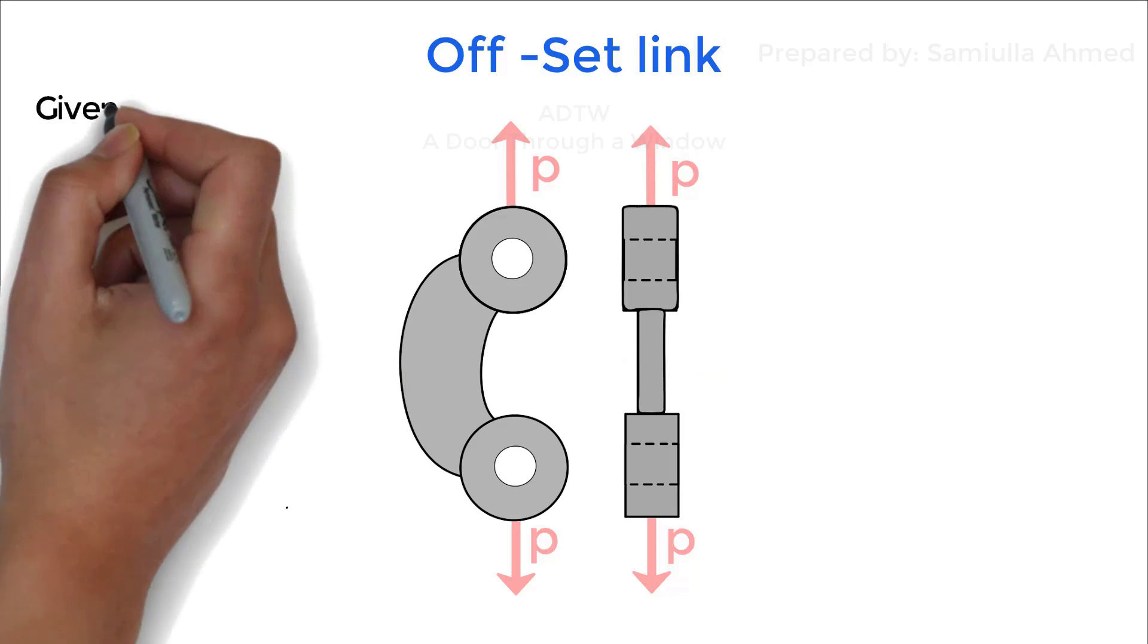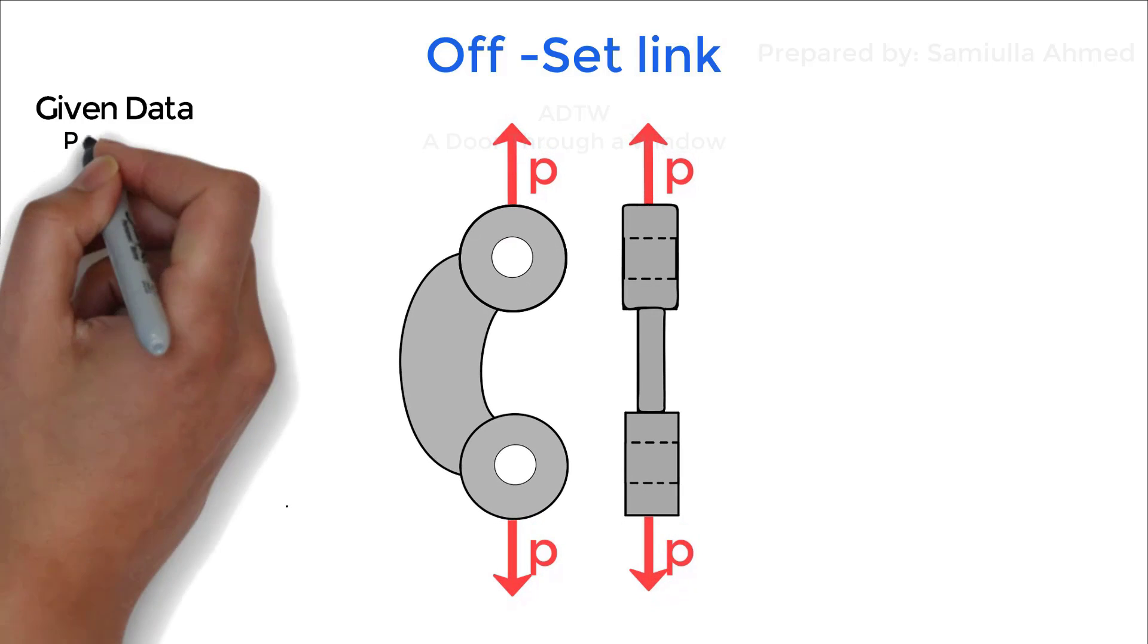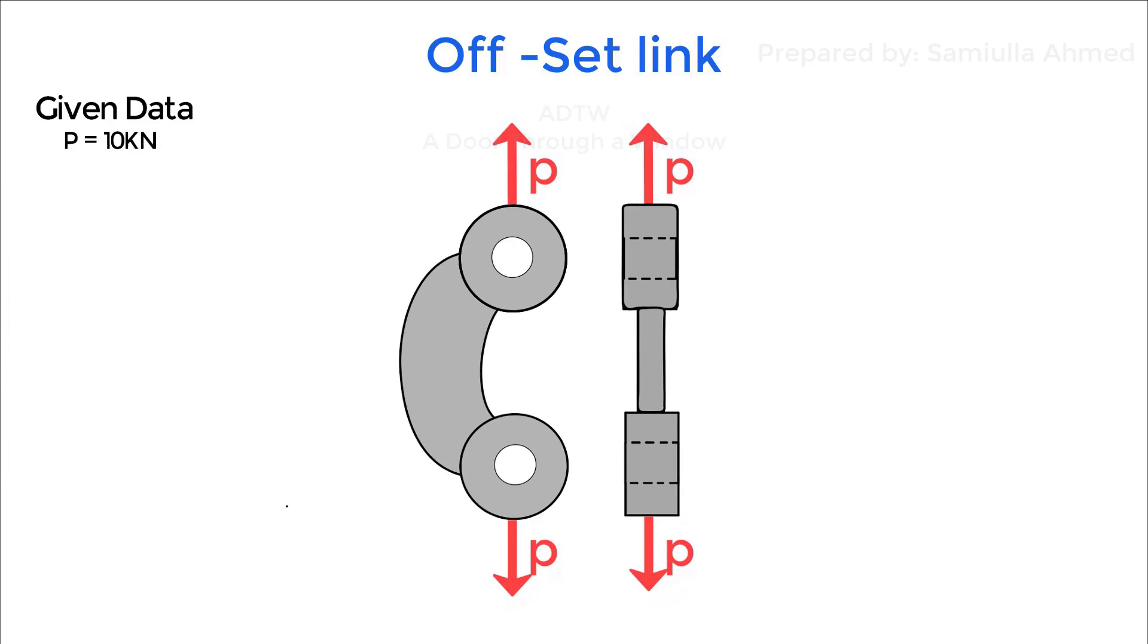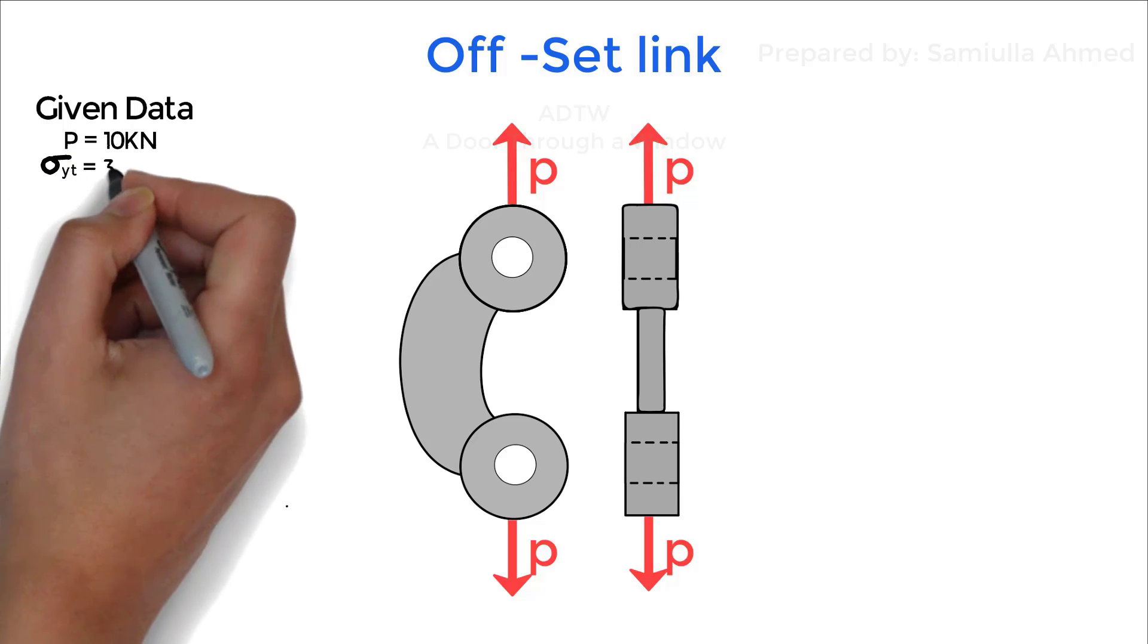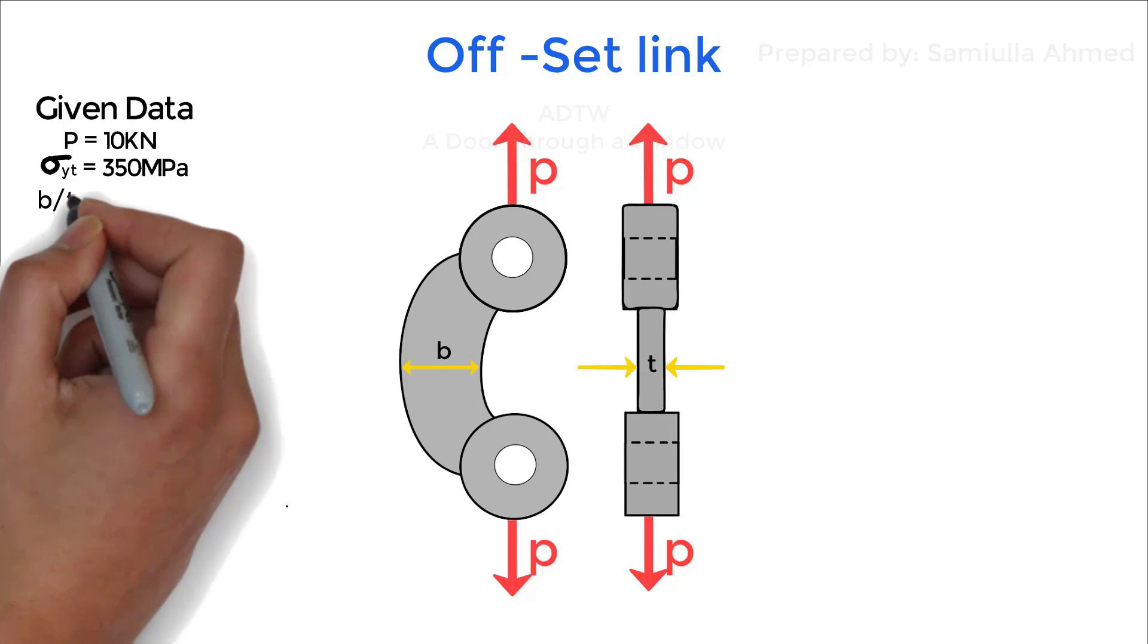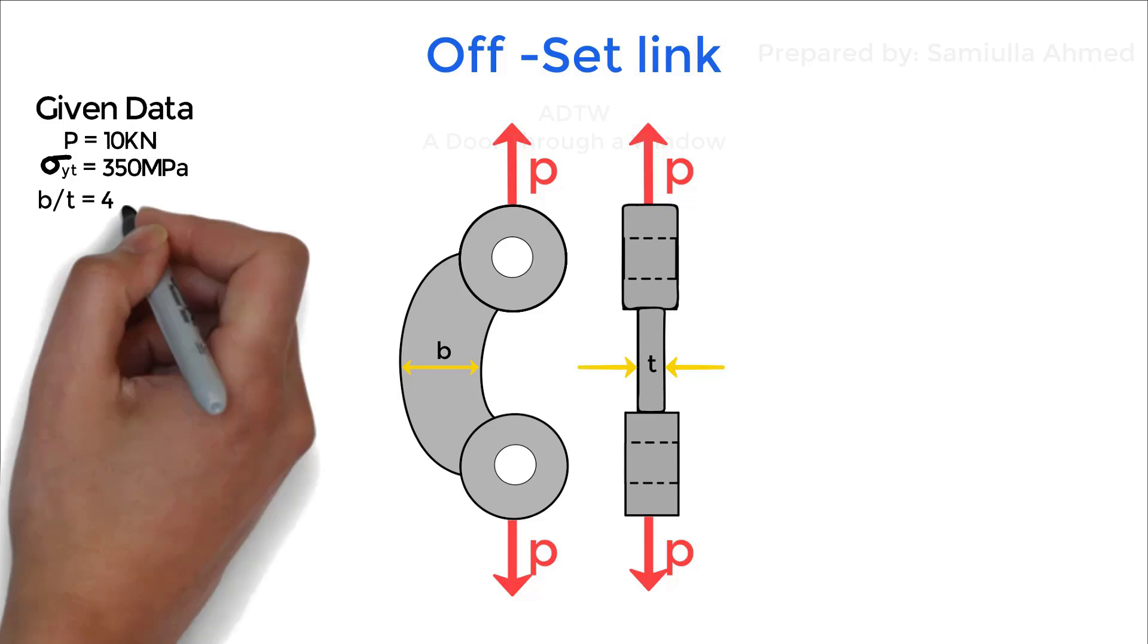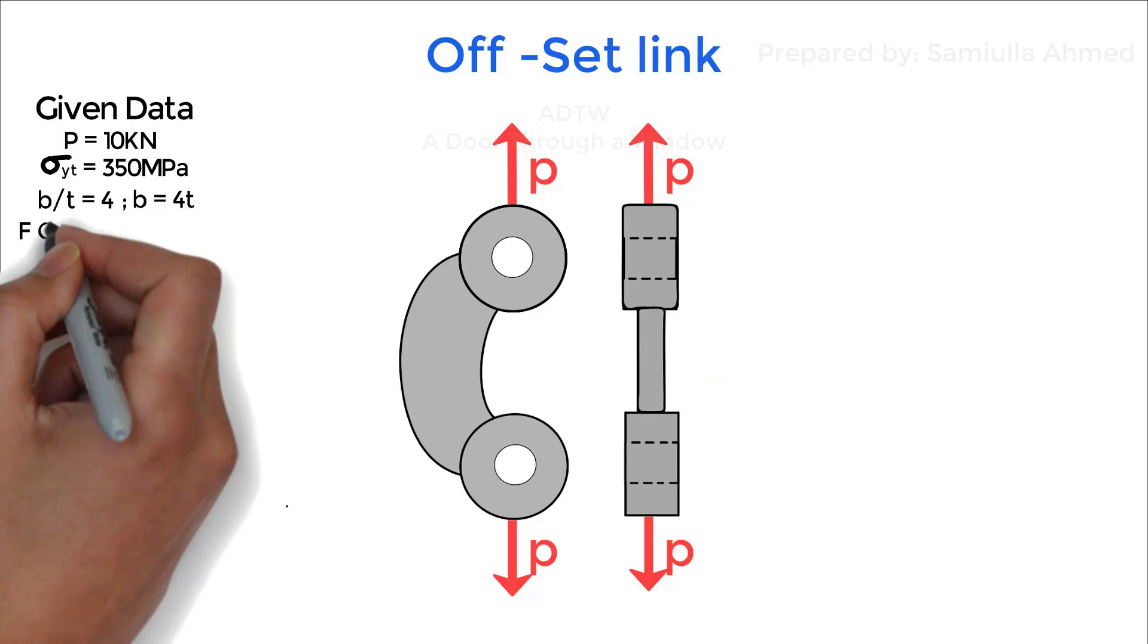For this kind of question the following data may be given. Load withstand by link is P and is equal to 10 kN. Yield stress which denoted as sigma yt is equal to 350 MPa. The ratio of width to thickness is given as 4, which can be rearranged as b equals 4 times t. Factor of safety is given as 4.